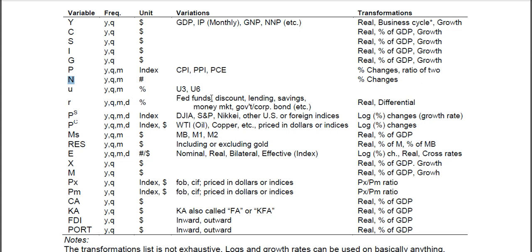The U.S. has the Fed funds rate, but in other countries you could have the discount rate, lending, savings, money market, government or corporate bonds. A lot of times there are multiple interest rates across countries. Real interest rates are controlled for inflation, so it's nominal minus inflation. You could also calculate an interest rate differential, which is simply one rate minus the other.